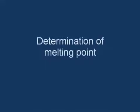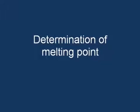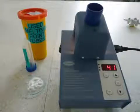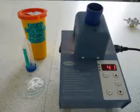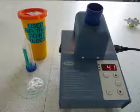Determination of a melting point is used as an identification tool of a synthesised compound. Pure compounds have a sharp melting point characteristic of that compound. Impurities may cause the melting point to be lowered, and the compound may melt gradually over a larger temperature range. To identify the compound, you need to compare the melting points that you have determined to the one found in scientific literature.